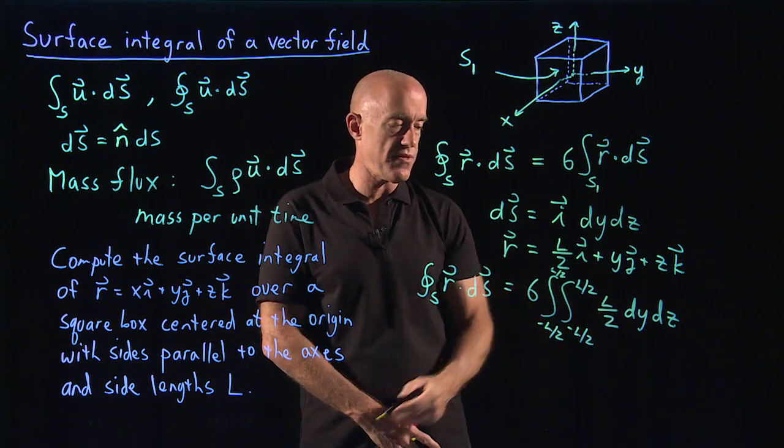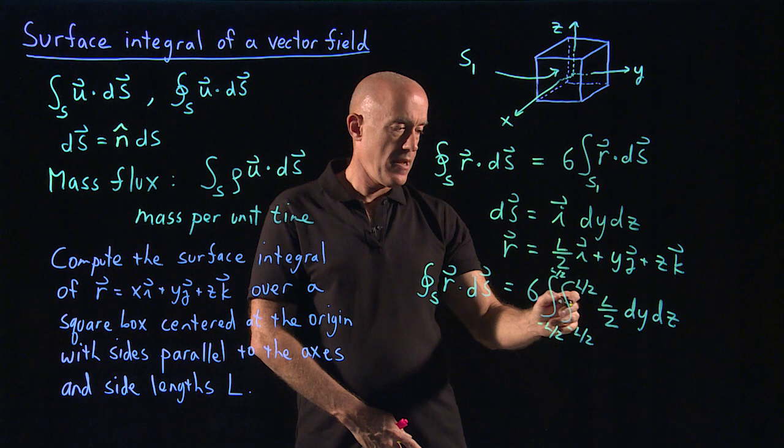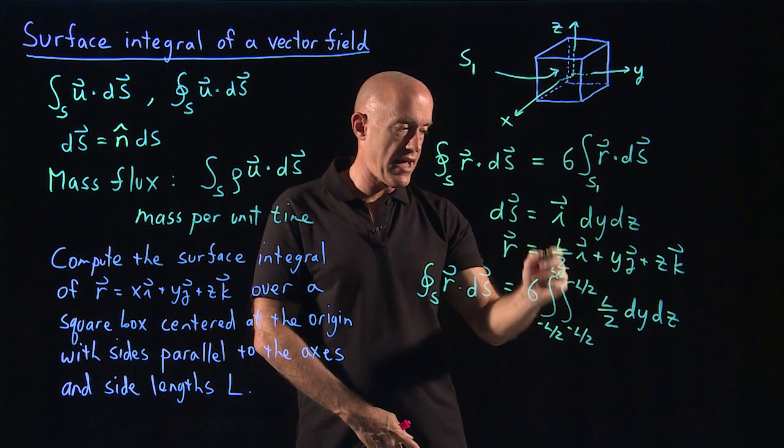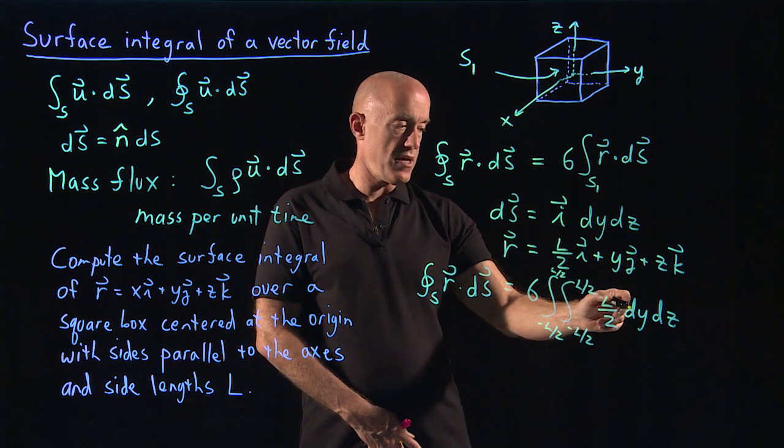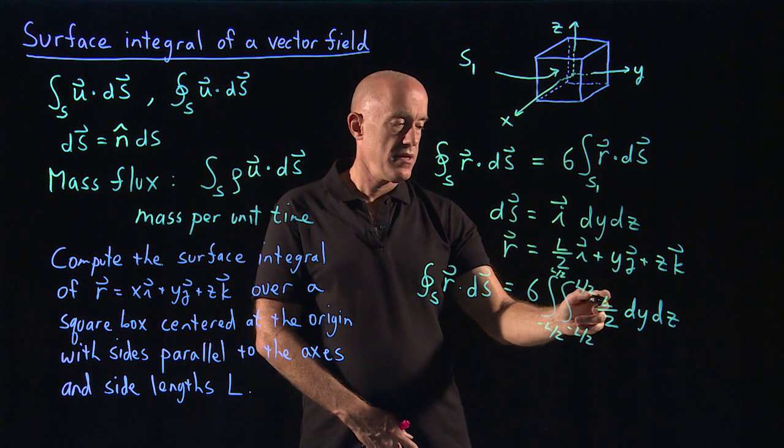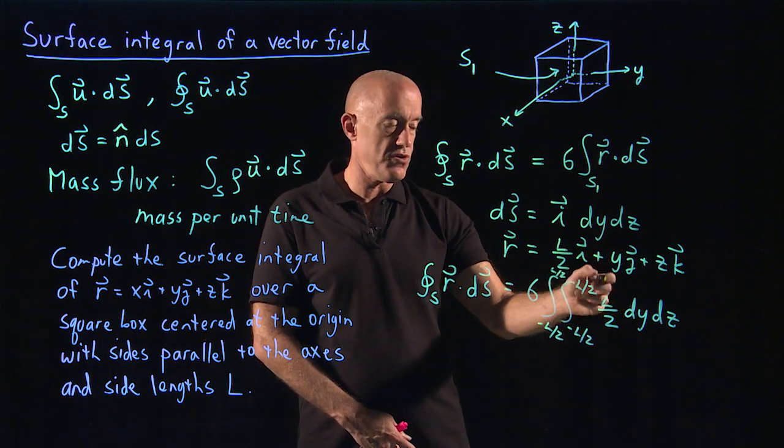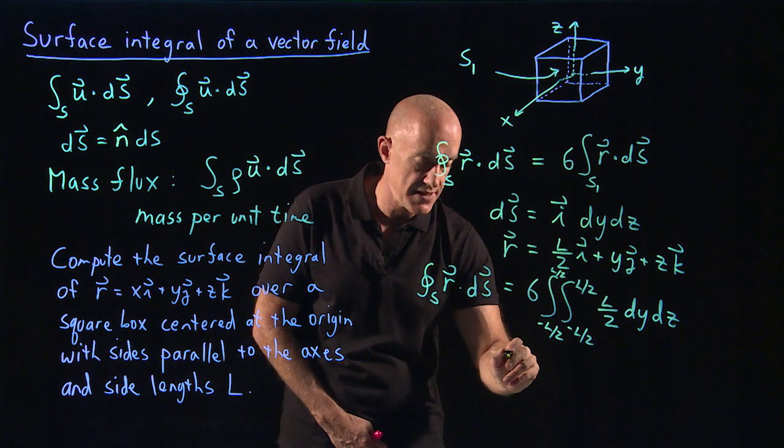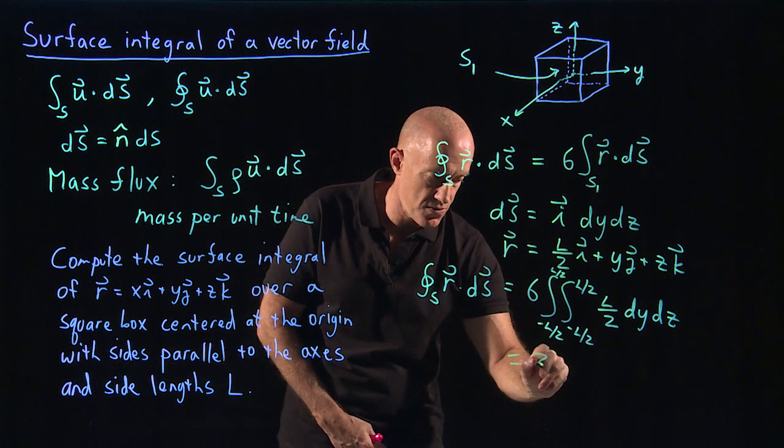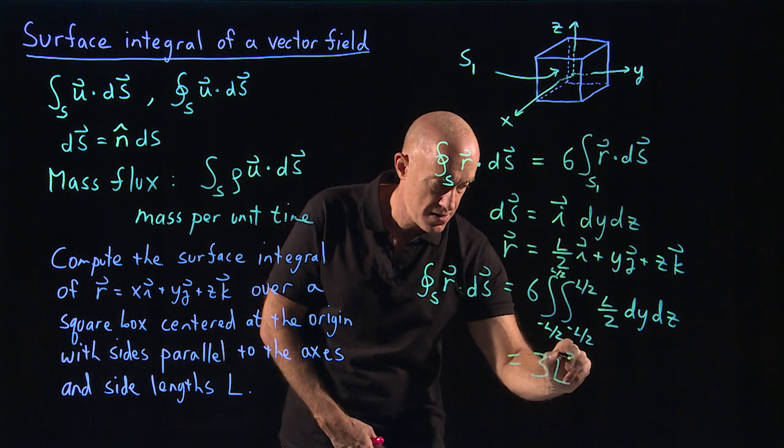So the integral dy just gives you the length of the interval. The integral dz gives you the length of the interval. The lengths of the intervals are L. So we get L squared times an L over 2, which is L cubed over 2 times 6, which will give us 3 times L cubed.